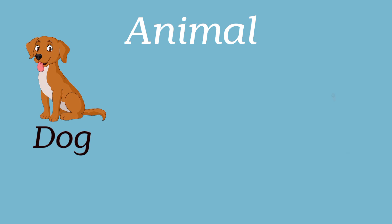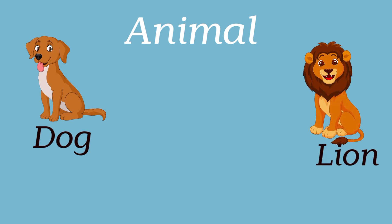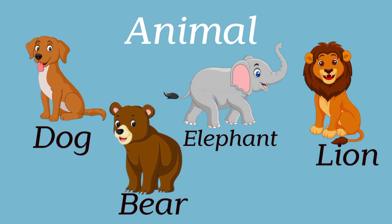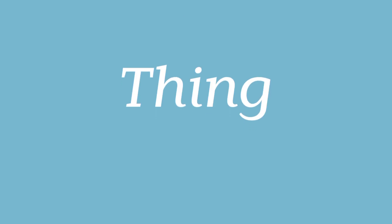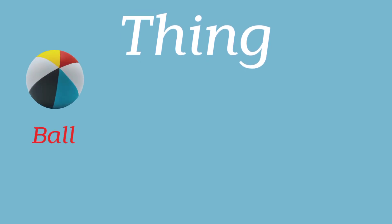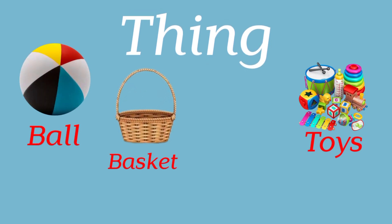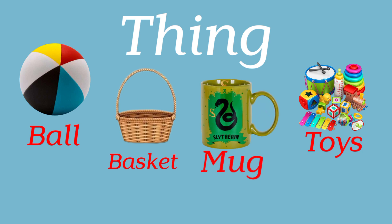Animals also have names, such as Dog, Lion, Elephant, Bear, and many more. Things we see have names too — Ball, Toys, Basket, Mug, and many more.